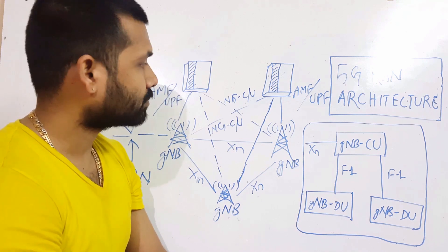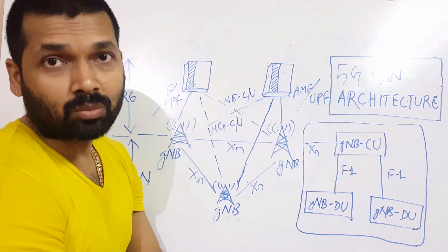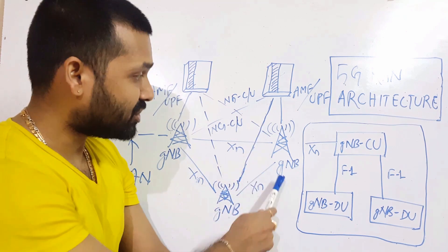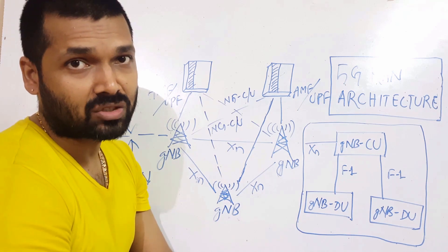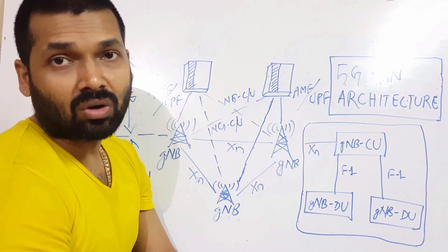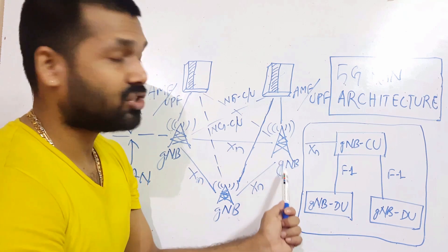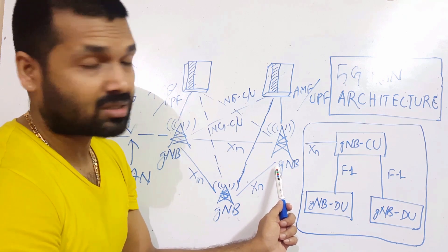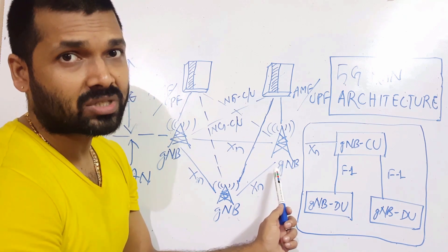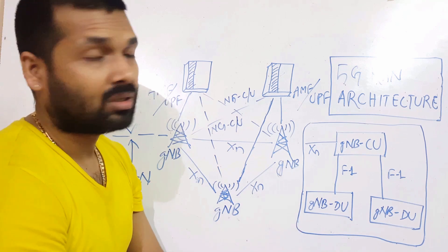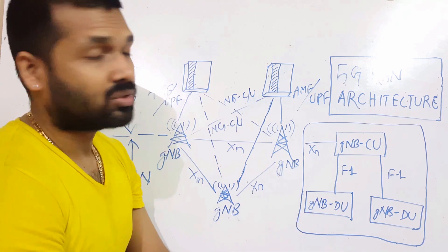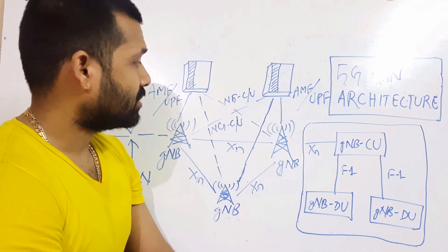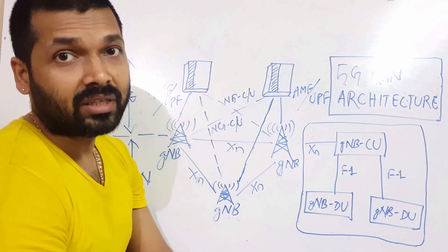Before moving on to architecture, let's discuss some key terms. gNodeB is the next generation Node B — just like we call it eNodeB in LTE, we call it gNodeB in 5G. The 'g' stands for next generation; some people say NG Node B or simply gNodeB, meaning new generation Node B or the 5G Node B.